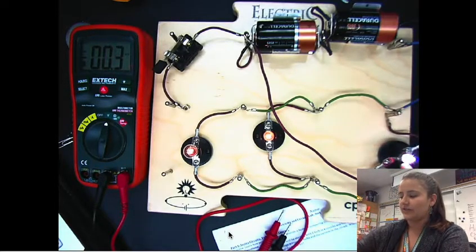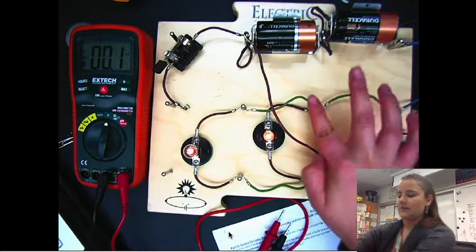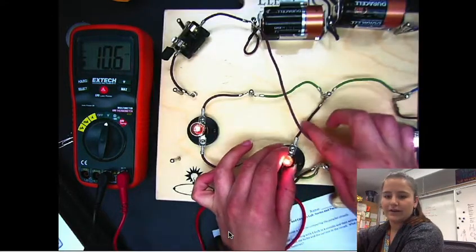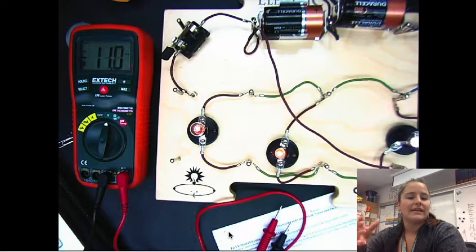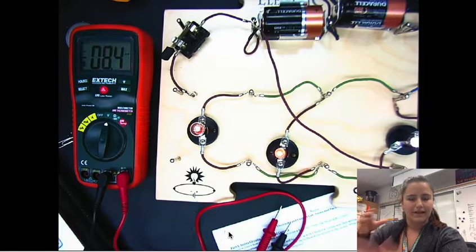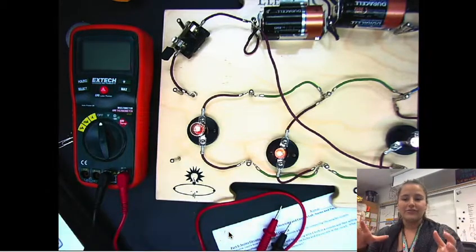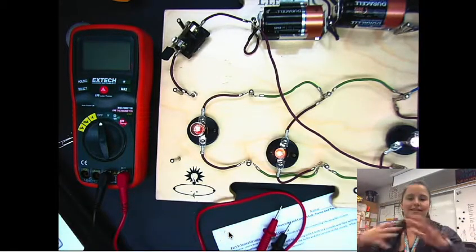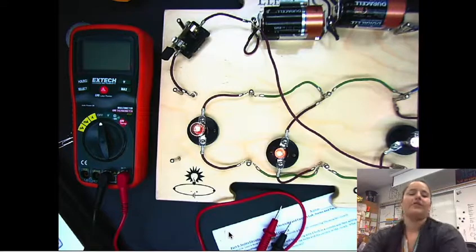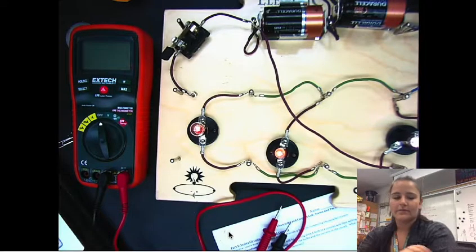So it flows in and then it can either flow to this bulb or onto this one, and then it could flow in here or there. That's the difference between series and parallel. In parallel there are multiple options for where the electricity is to flow. In series there's only one path for the electricity to flow.